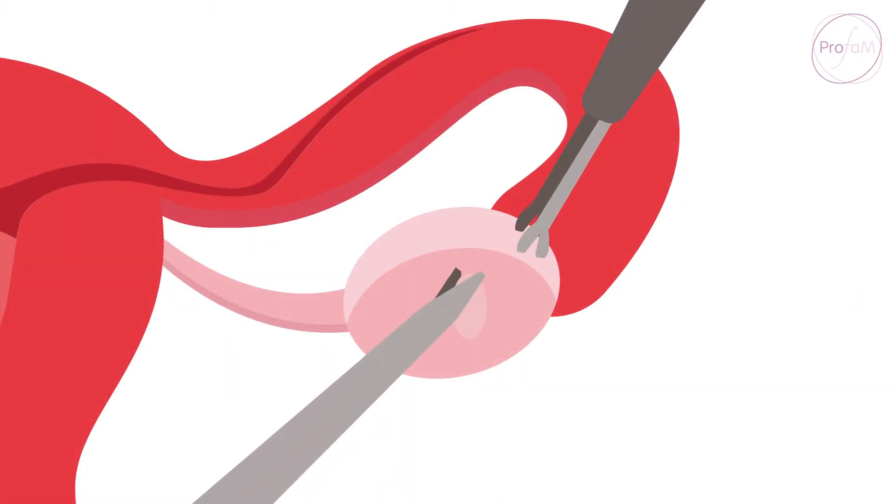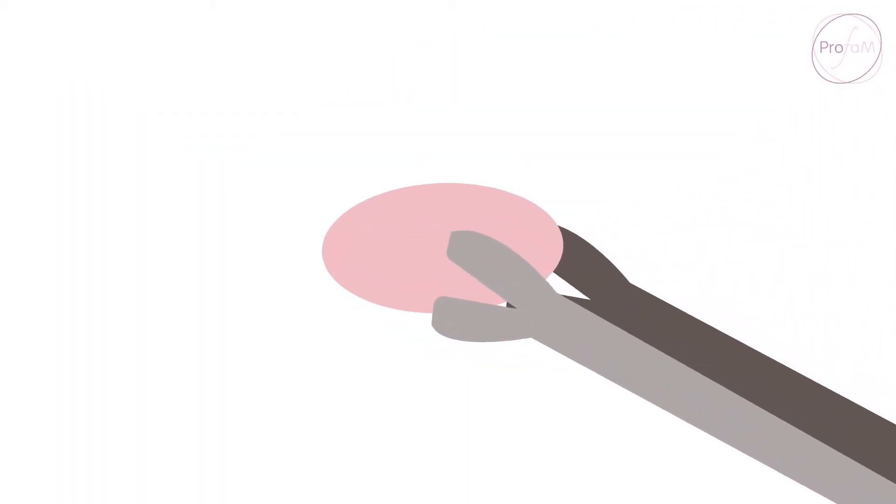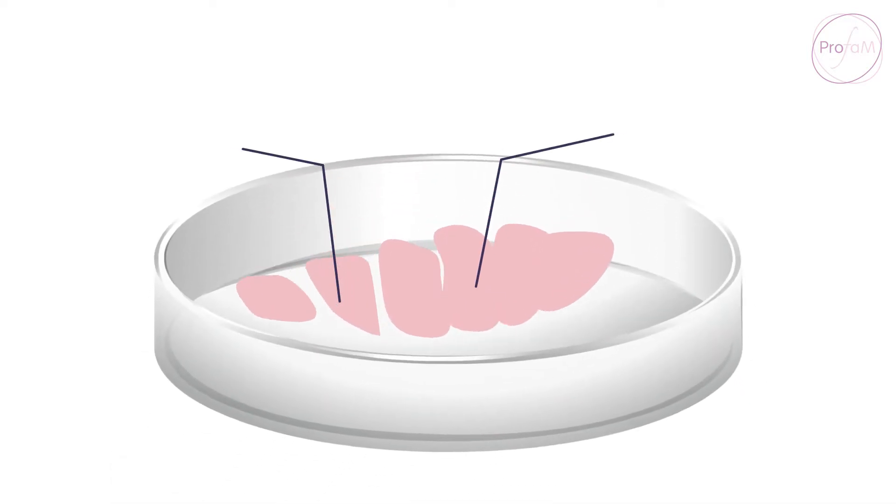ProFam technology is designed to offer women the opportunity to preserve some of her ovarian tissue that contains large numbers of the immature eggs for later use. There are two important uses for this precious tissue. First, hundreds, maybe thousands of eggs are preserved